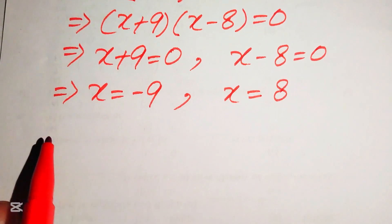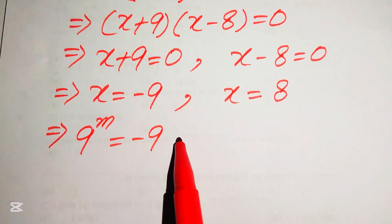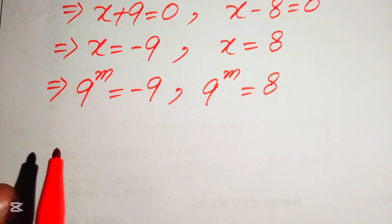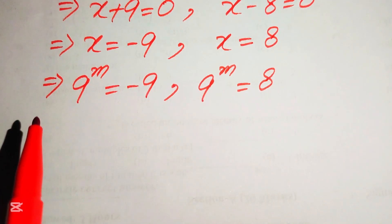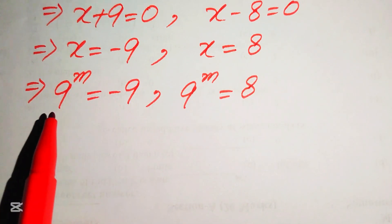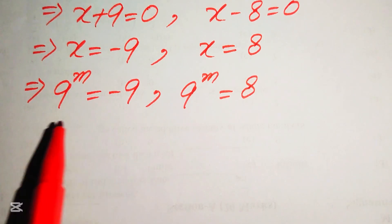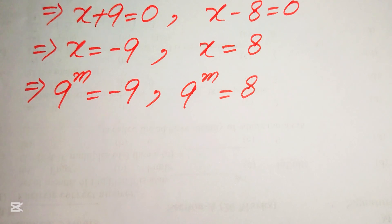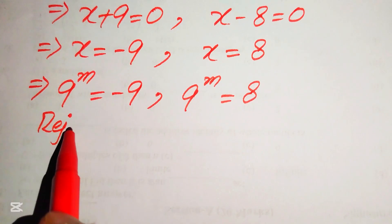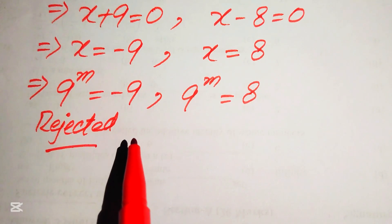Back-substituting x equals 9 to the power of m: in the first case 9 to the power of m equals minus 9, but an exponential function always gives positive values, so this case is rejected. We proceed with the second case only: 9 to the power of m equals 8.